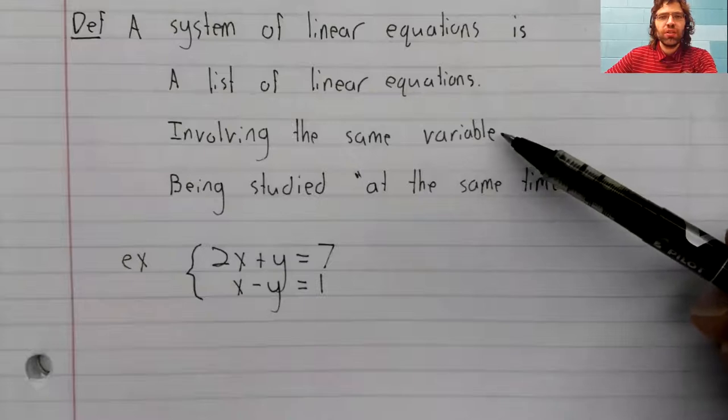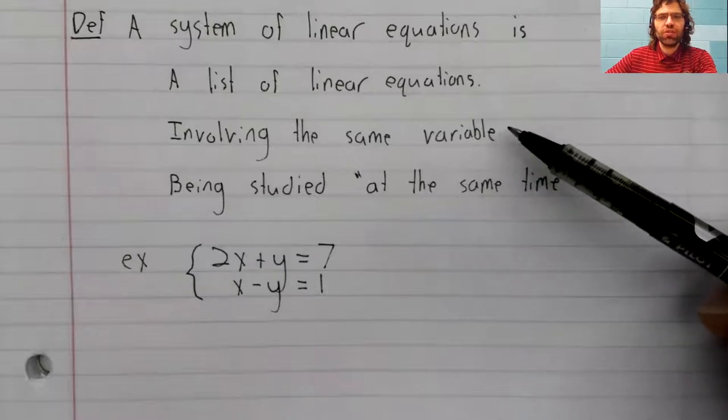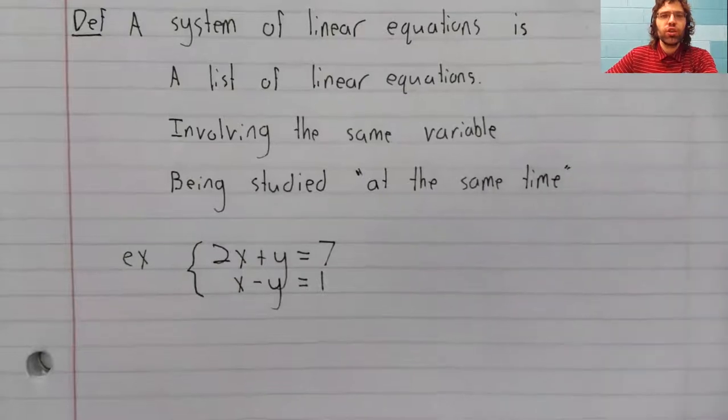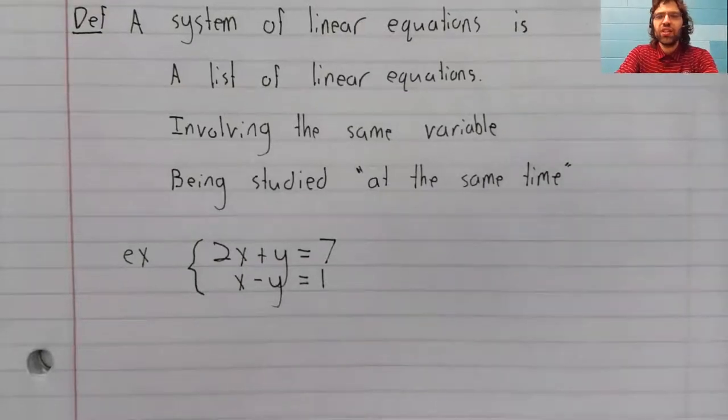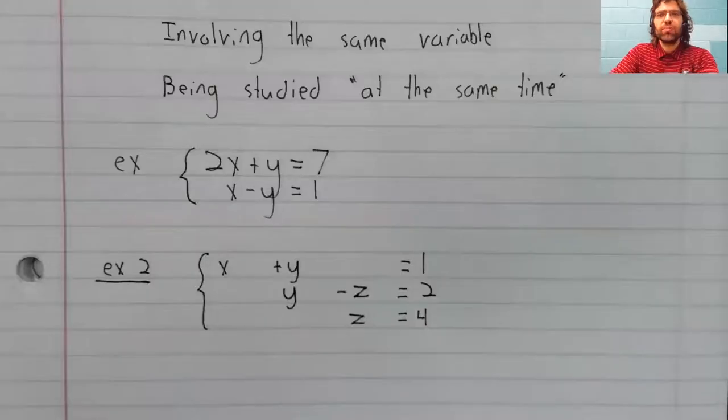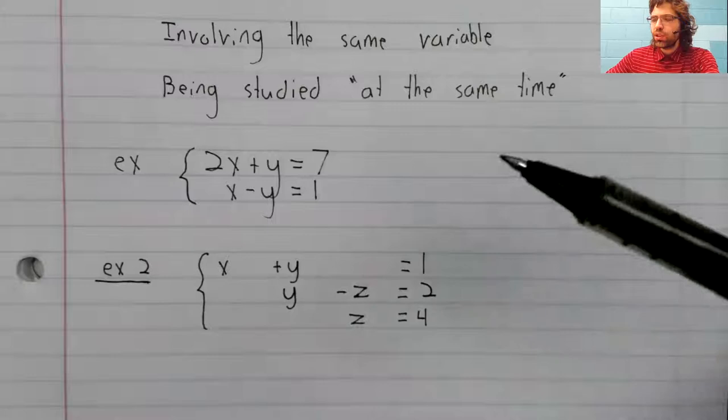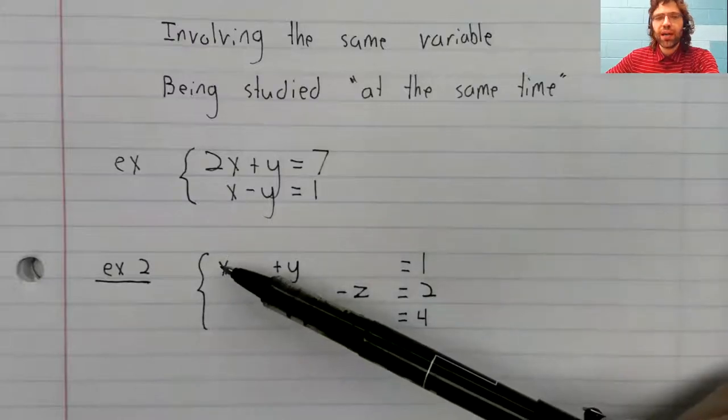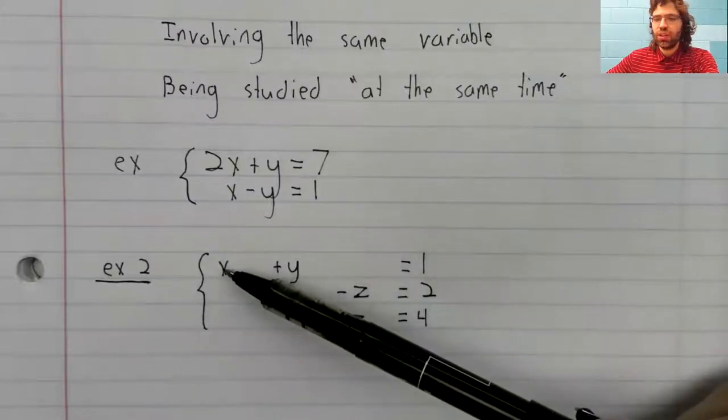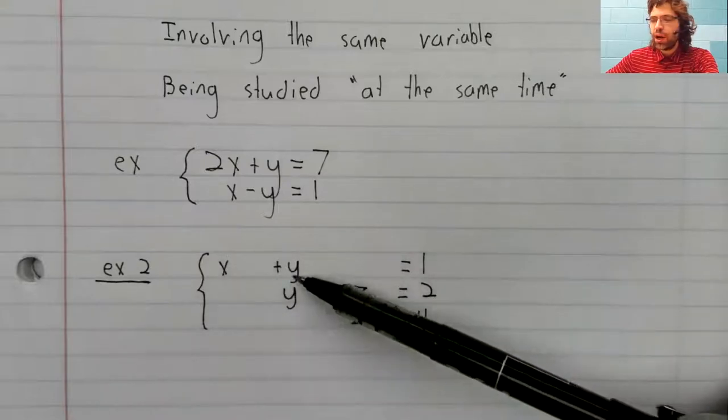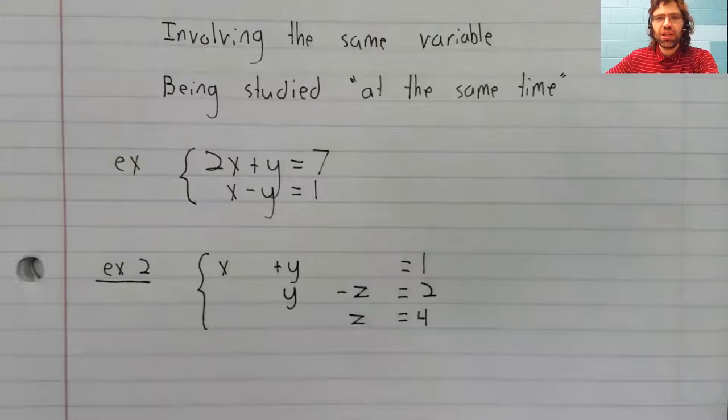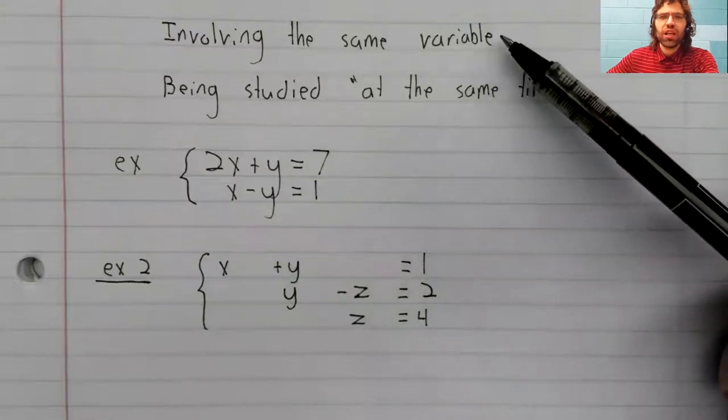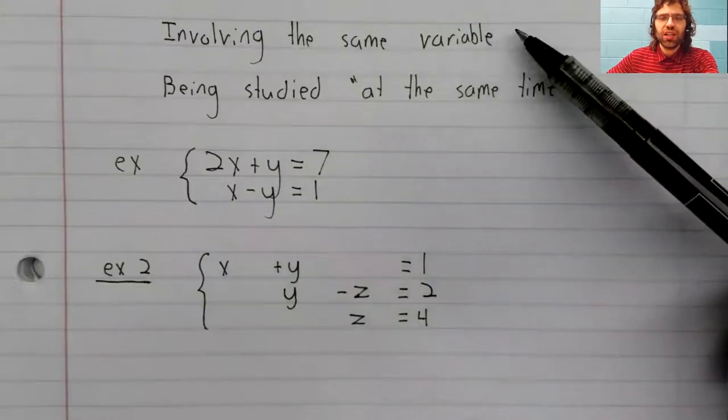The statement that the equations should involve the same variable shouldn't be taken as saying more than it is. This is a perfectly valid system. Now, notice that this variable x only appears in one of these equations, and y and z each only appear in two of the equations. But we can think of them as involving the same variables.